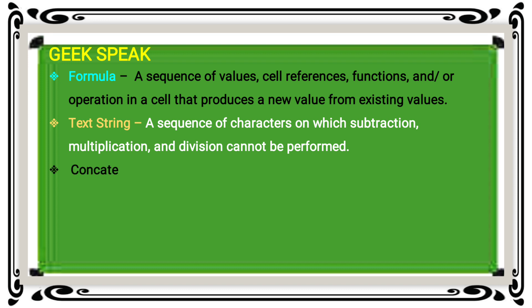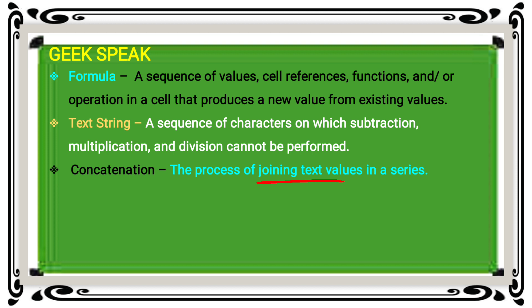Concatenation is the process of joining text values in a series. You can write a series — the text value joining process is called concatenation. You can add two texts or add one or more texts. This is called concatenation.